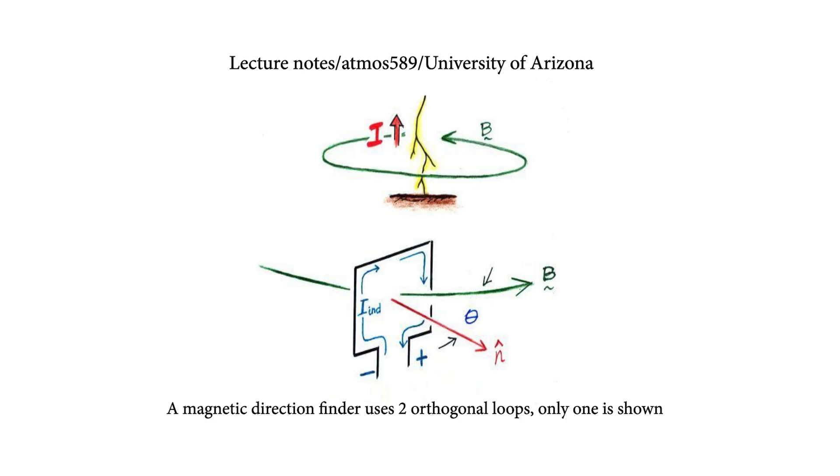These drawings from the lecture notes of a course on atmospheric electricity at the University of Arizona beautifully illustrate how magnetic loop antennas are used in lightning location systems.